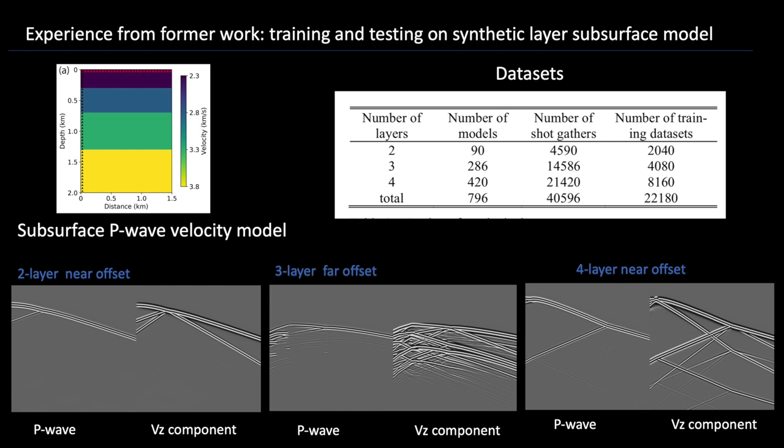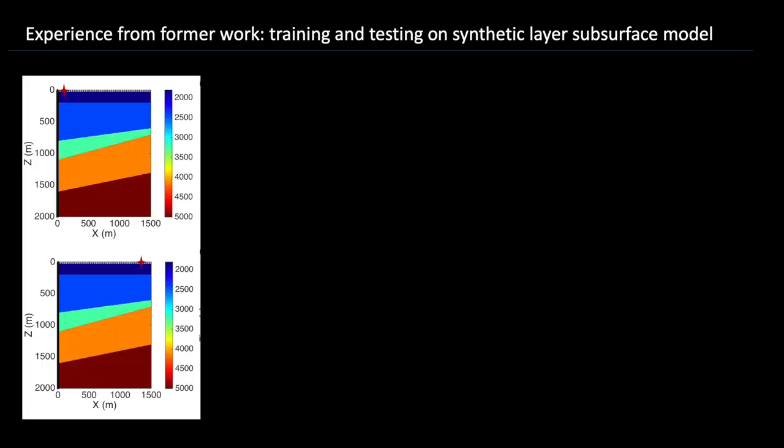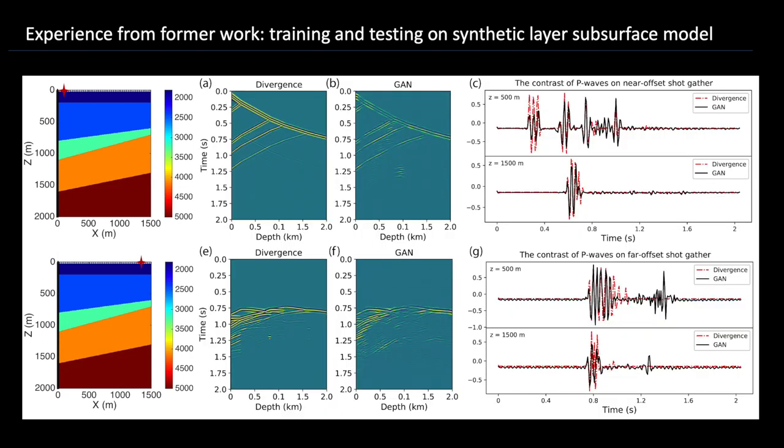We use part of this data training and testing through our neural network. The network shows its ability to learn wave separation. And we make further tests on more complex subsurface model, just like what I show you here. It owns more layers, even inclined layers rather than flat layers. The network trained on flat layers can still separate these waves as what we want.